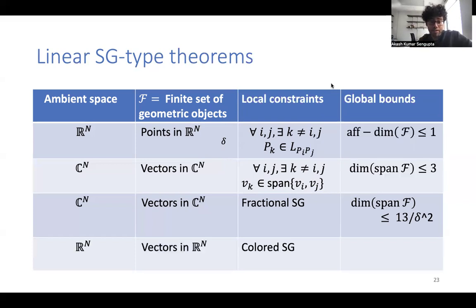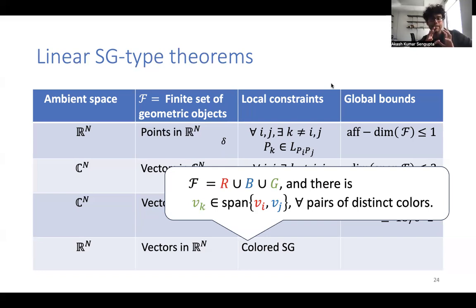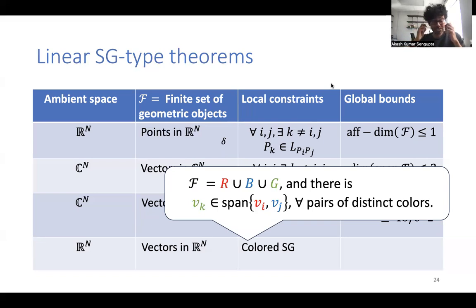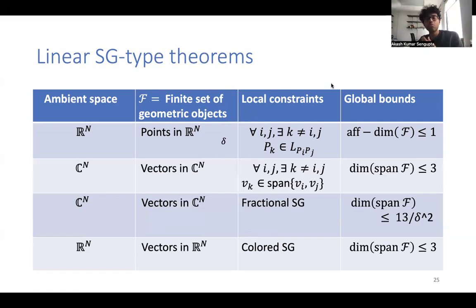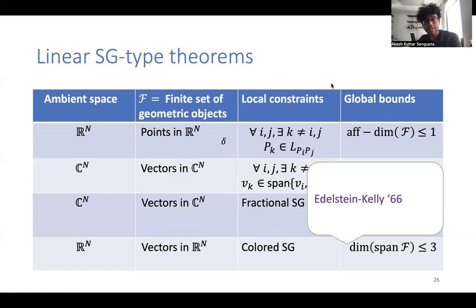One more variant: in Rn, take a finite set of vectors where the local constraint is a colored Sylvester-Galai condition. Our set F is partitioned into three subsets — red, blue, green — and whenever we take a red vector and a blue vector, there is a green vector in their span. This is defined for any pair of distinct colors. Even then we have a global dimension bound of three, and this is the classical Edelstein-Gallai theorem.